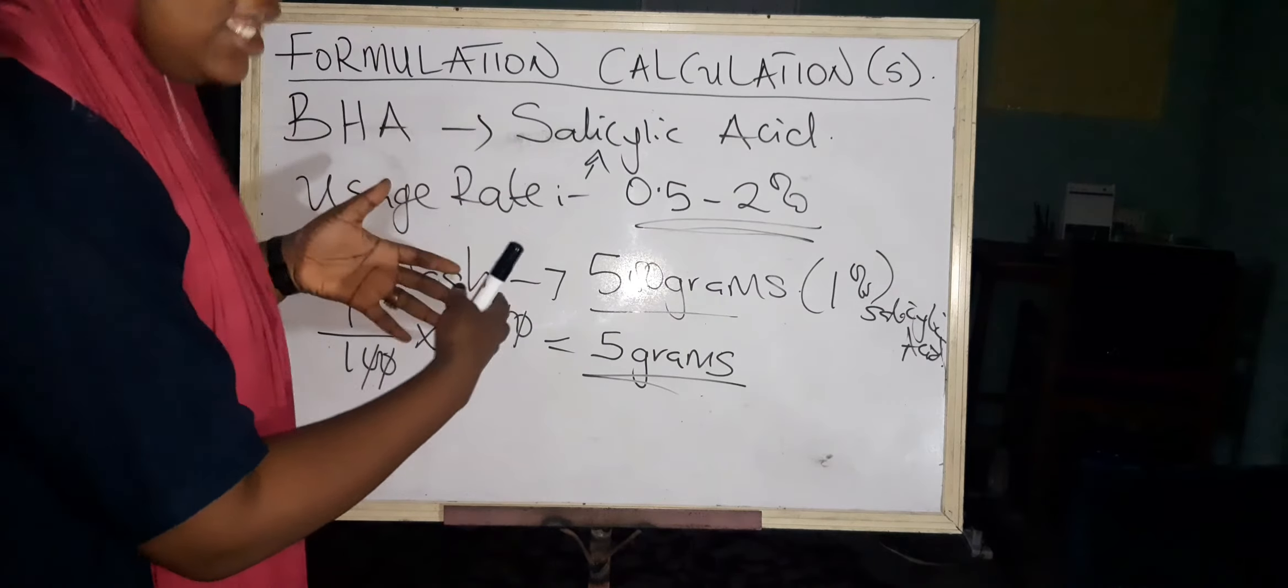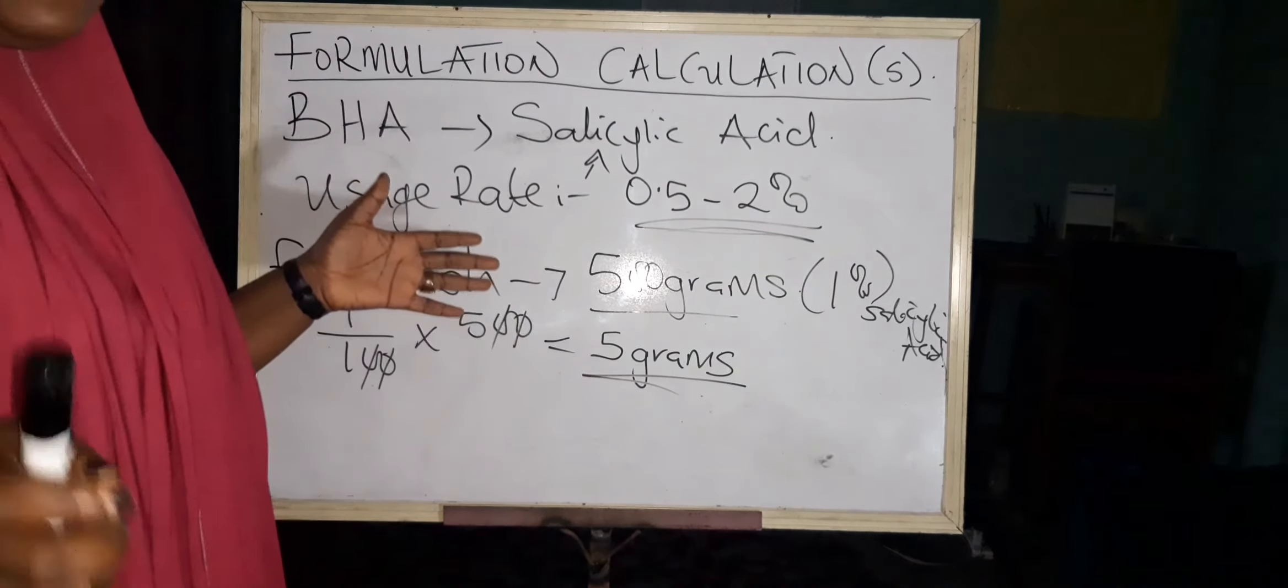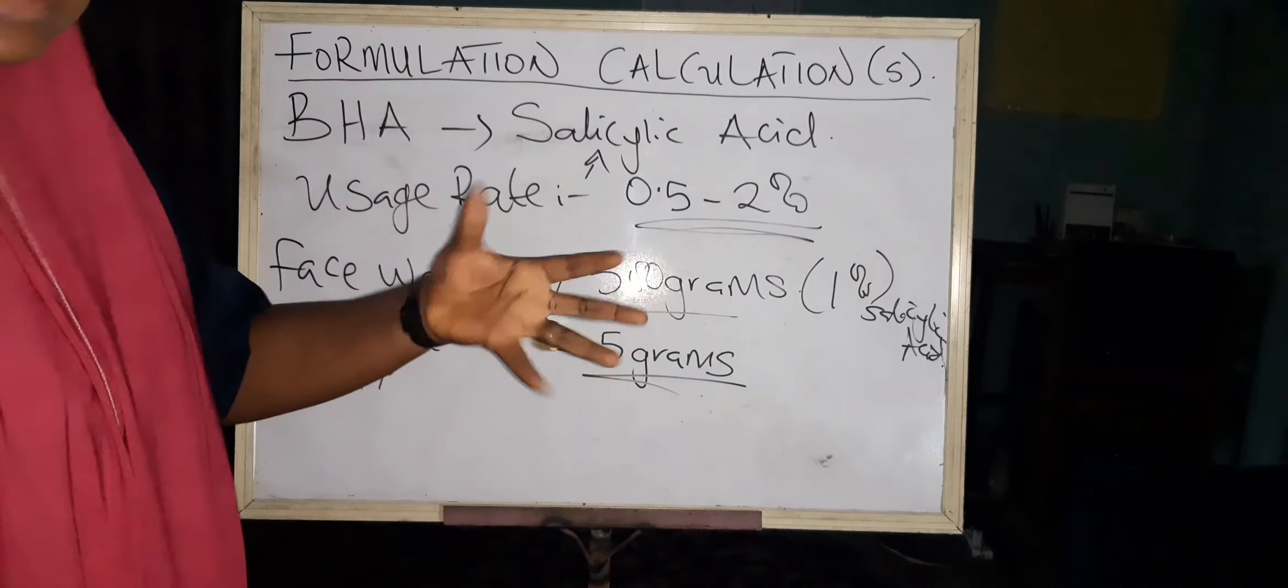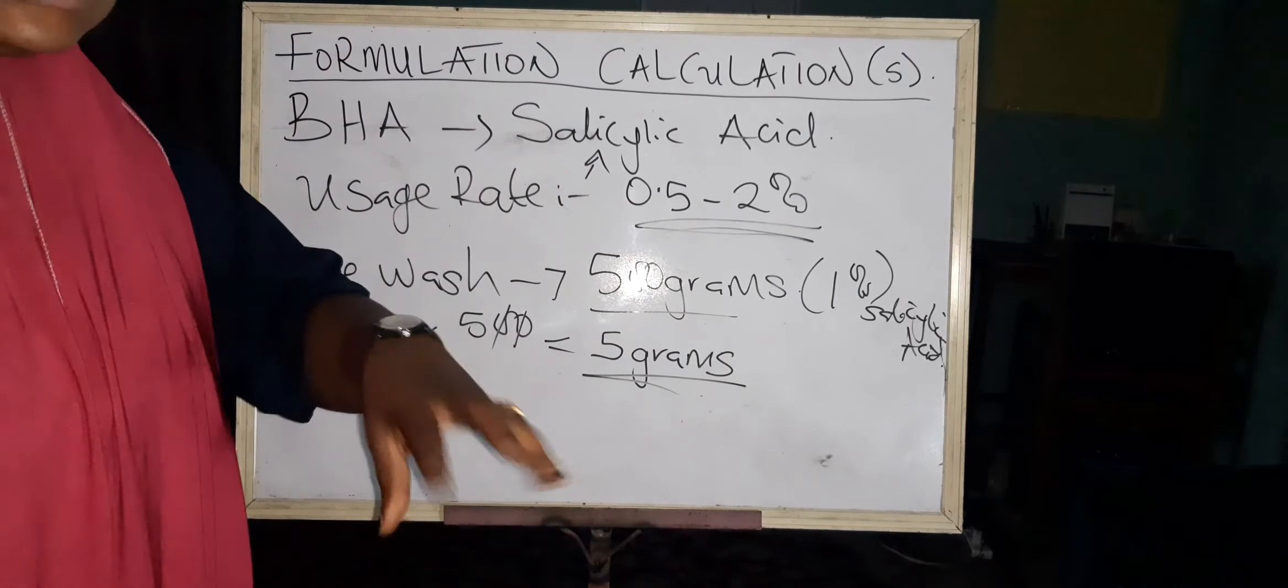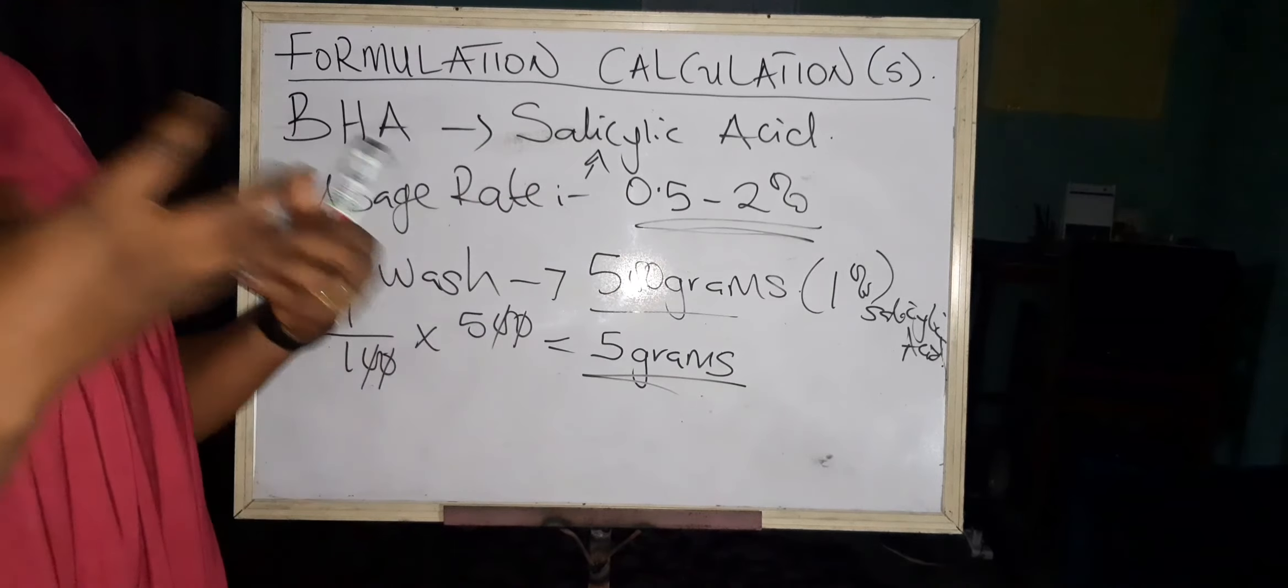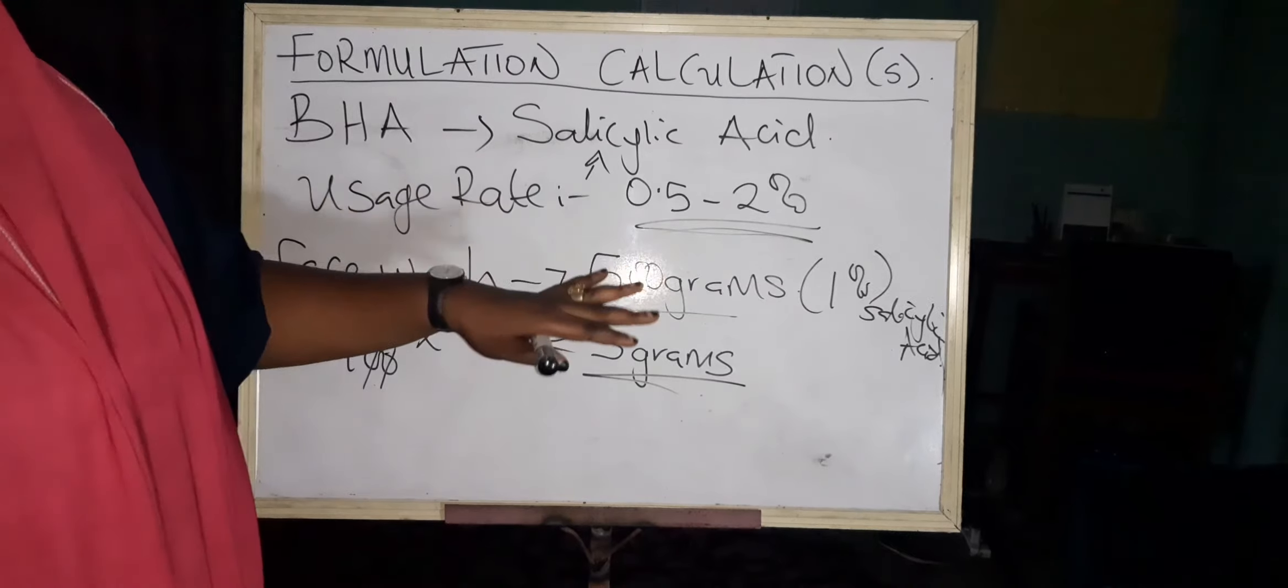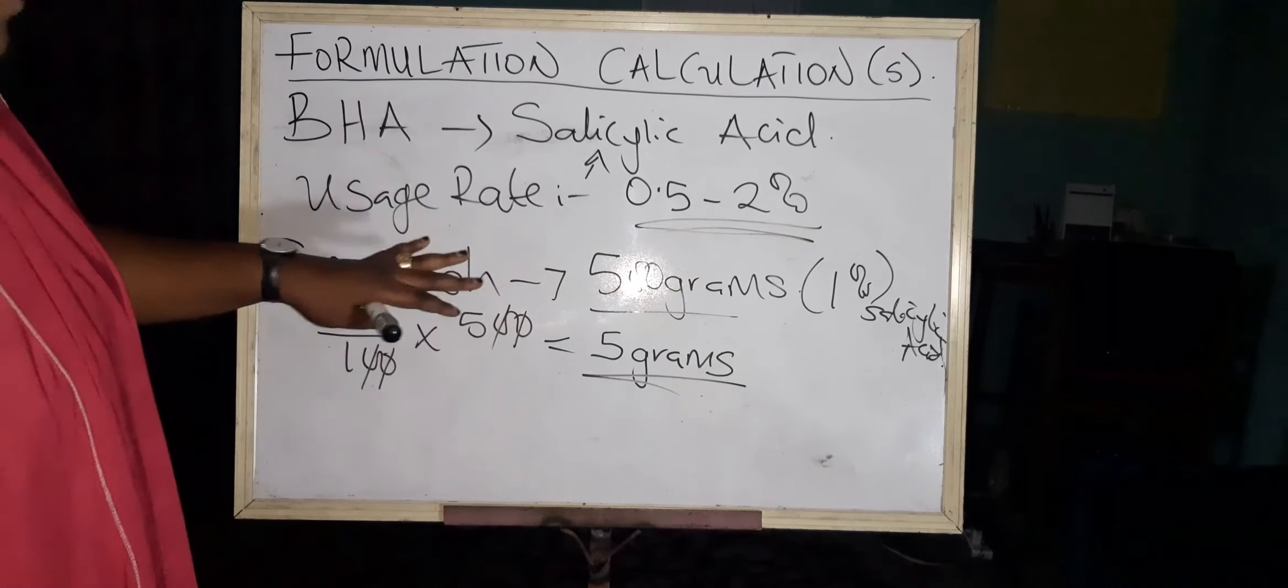Some BHAs could also cause purging on their own, even when used at the right usage rate. An example of such a BHA is azelaic acid—it has a tendency of purging your skin. But the purging is not negative; it's bringing out all the acne hidden underneath your skin and then clearing them off eventually.